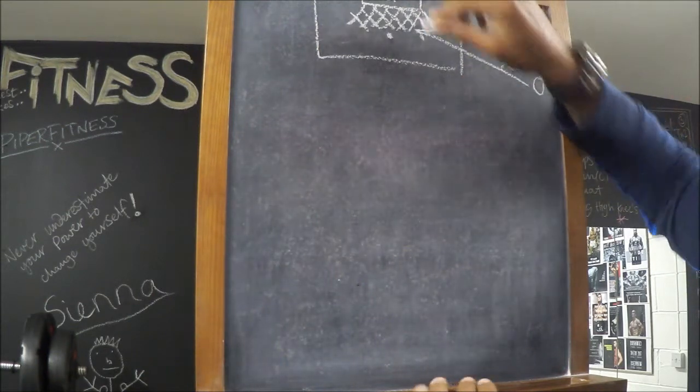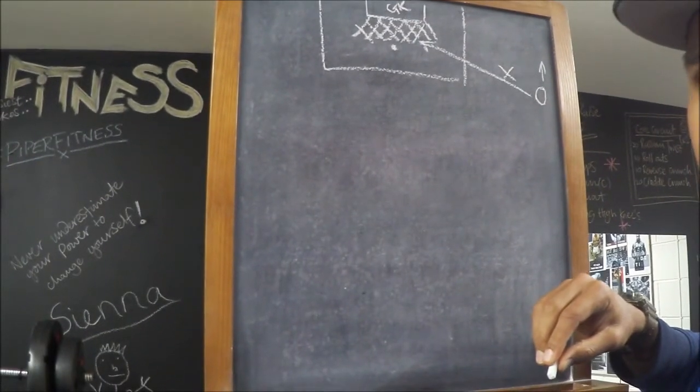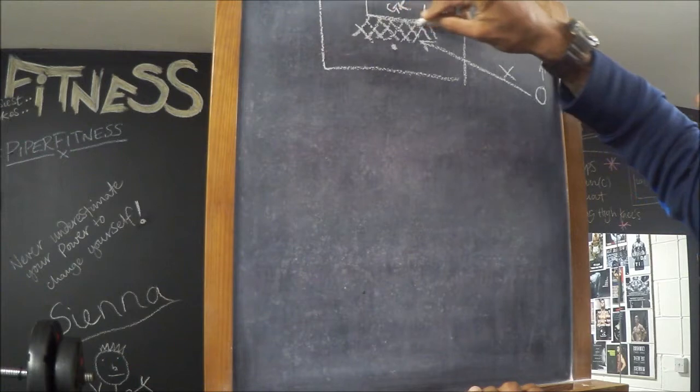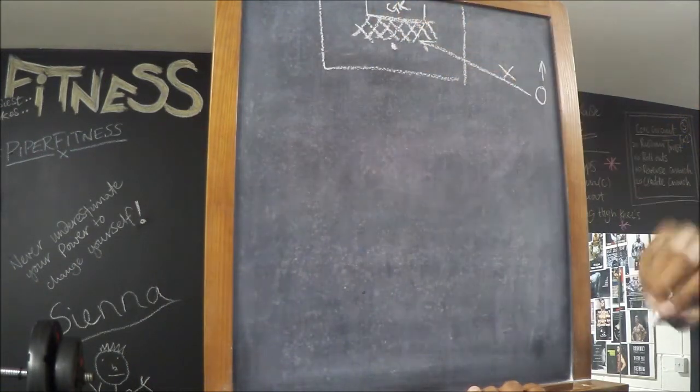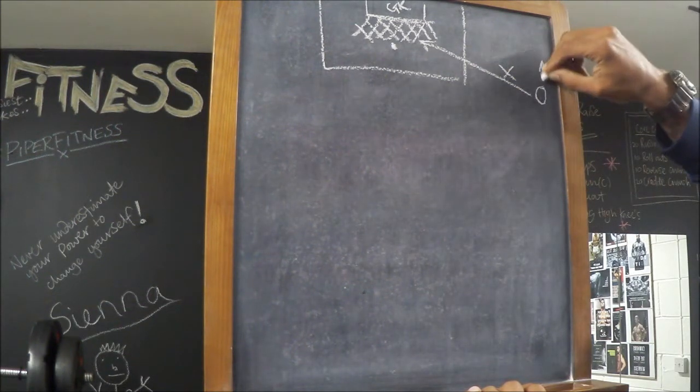So when we talk about as a wide man aiming for the second six yard box, this is the area that we're talking about. This is the area here, the second six yard box, in between the six yard box line and the penalty spot.